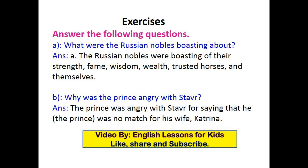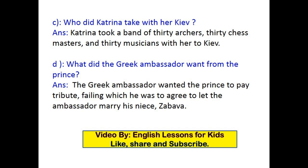Now come to the exercises. Comprehension — answer the following questions. A: What were the Russian nobles boasting about? The Russian nobles were boasting of their strength, fame, wisdom, wealth, trusted horses, and themselves. B: Why was the prince angry with Steve? The prince was angry with Steve for saying that he, the prince, was no match for his wife Katrina. C: Who did Katrina take with her to Kiev? Katrina took a band of 30 archers, 30 chess masters, and 30 musicians with her. D: What did the Greek ambassador want from the prince? The Greek ambassador wanted the prince to pay tribute, failing which he was to agree to let the ambassador marry his niece the Baba.